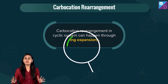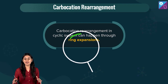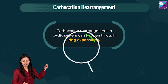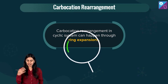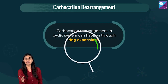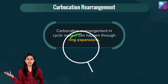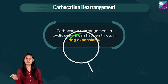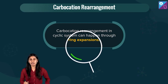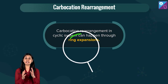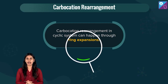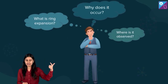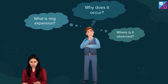There is a very important concept coming your way, which is about ring expansion. Carbocation rearrangement in a cyclic system can happen through ring expansion. The questions in your mind are probably: what is ring expansion, why does it occur, and where is it observed?